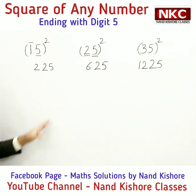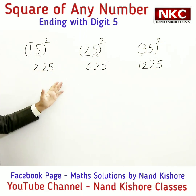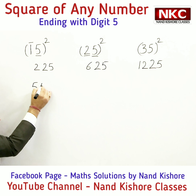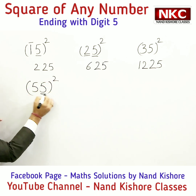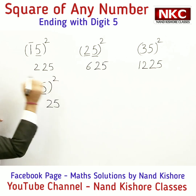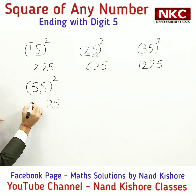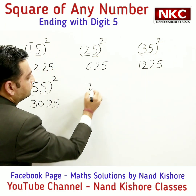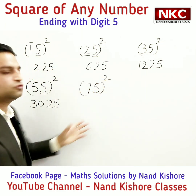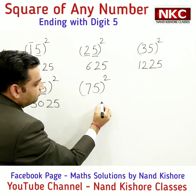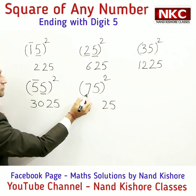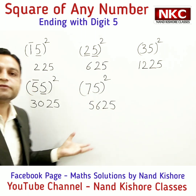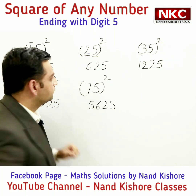It's a very easy trick. We have done it for 15, 25, and 35. Let's try a few more. For 55²: 5² = 25, and 5 × 6 = 30, so the answer is 3025. For 75²: 5² = 25, and 7 × 8 = 56, so the answer is 5625.